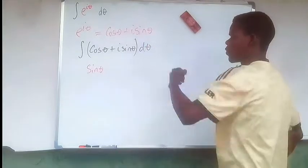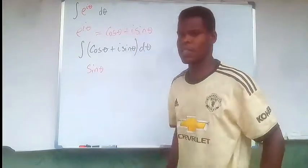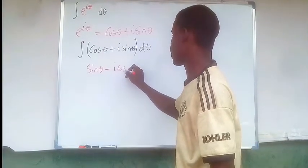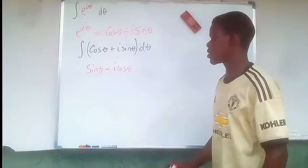Now the integral of i sine theta where i is constant, i squared equals negative 1. So we're going to have negative i cosine theta. That's just it.